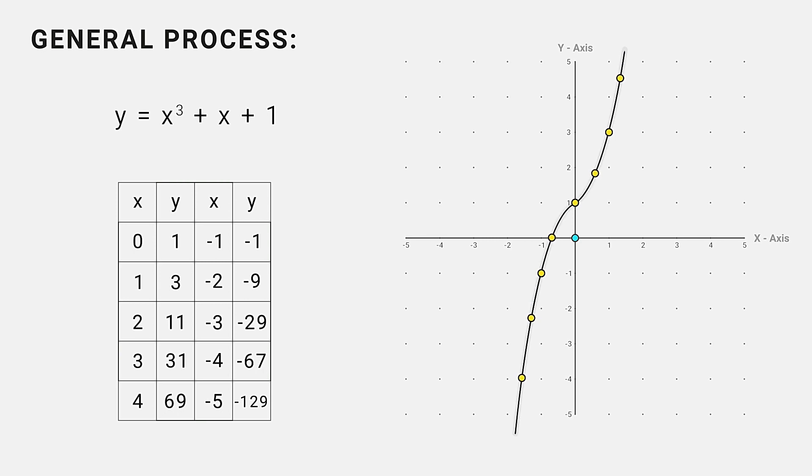Now when we join all these points, we get the graph of f of x. But it takes lots of time. And we need to find out how the curvature of these curves look like between x equal to 1 and x equal to 2. Which will take more time.